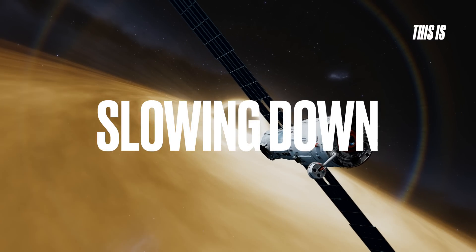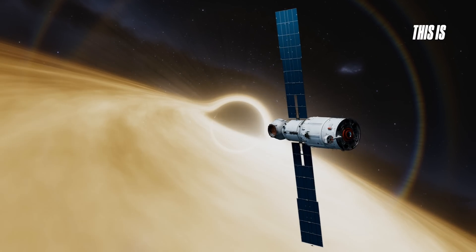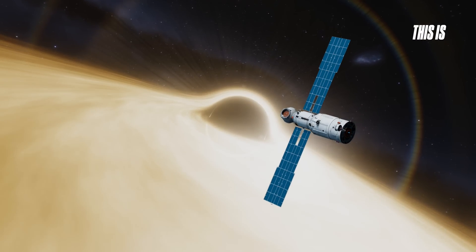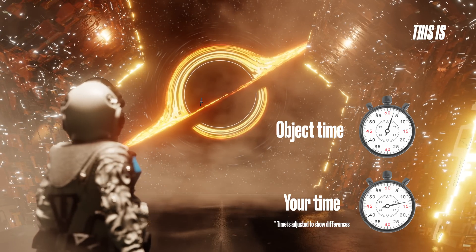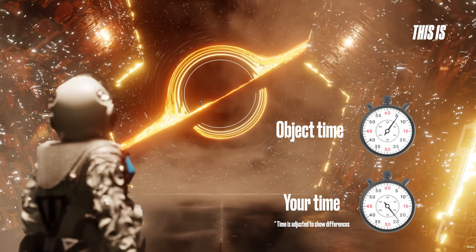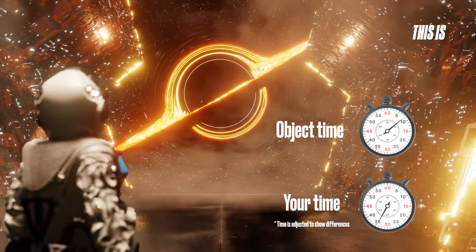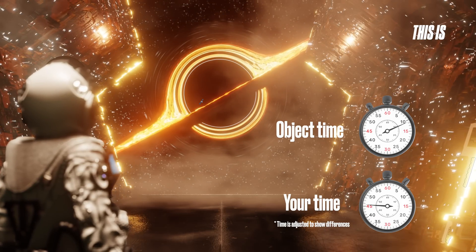As the object gets close to the event horizon, gravitational time dilation begins to take effect. This means the time for the falling object flows differently than for you, watching from a distance. From your perspective, the object slows down. The closer it gets to the horizon, the slower it appears to move.